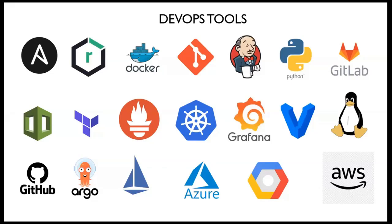Open source means anybody can take a tool and modify it to suit their needs. That's why there are several variants of Linux — Ubuntu, Red Hat, Fedora, CentOS, SUSE — because the Linux kernel is open source. AWS even has its own Amazon Linux 2 AMI and the more recent Amazon Linux 2023 AMI.